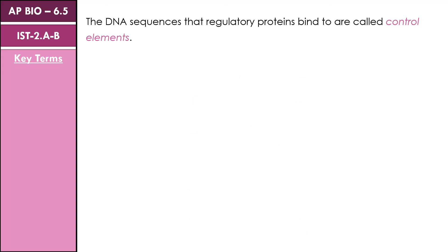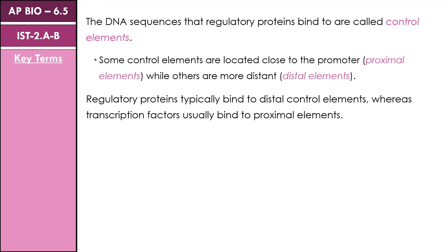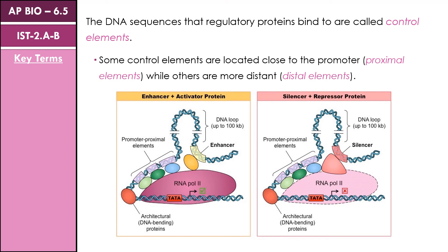The DNA sequences that regulatory proteins bind to are known as control elements — these being our enhancer and silencer sites. These can be located close to the promoter, which we call proximal elements, while others can be farther away from the promoter, referred to as distal elements. Regulatory proteins will typically bind to the distal, farther away, control elements, whereas transcription factors usually bind closer to the promoter at proximal elements. We can see here how DNA loops in order for some regulatory proteins like activators and repressors to bind to those more distal elements of our regulatory sequences, including enhancers and silencers.